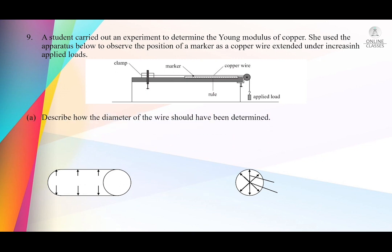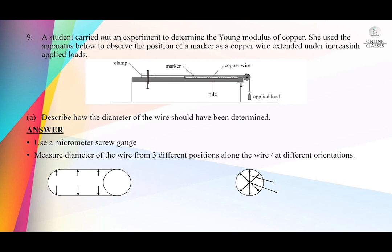The question asks: describe how the diameter of the wire should have been determined. Use a micrometer screw gauge and measure the diameter at 3 different positions or 3 different orientations of the wire, then calculate the mean diameter: d_avg = (d₁ + d₂ + d₃) / 3.